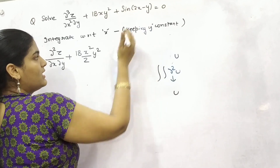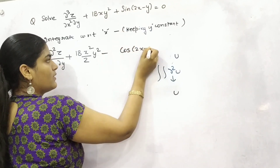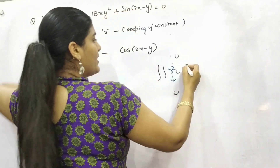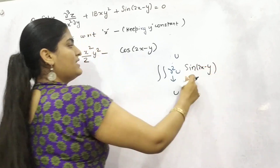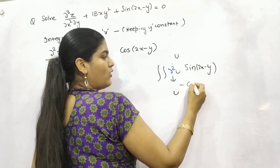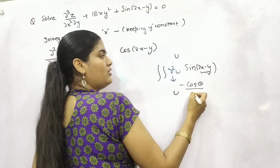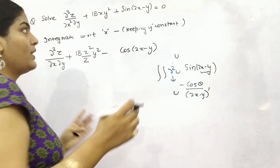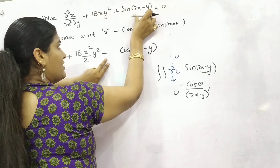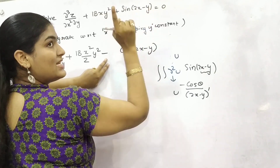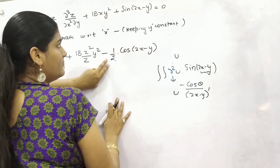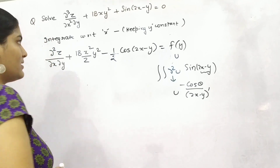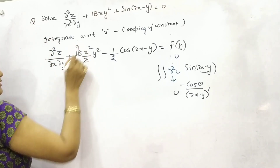For the sine term: the integral of sin(θ) is −cos(θ). For our θ = 2x − y, you integrate it — that is, you differentiate θ with respect to x, which gives 2, and divide by it. So the integral of sin(2x − y) with respect to x is −cos(2x − y) / 2. This is then in the form of a function in terms of y as a constant. Now you can simplify.